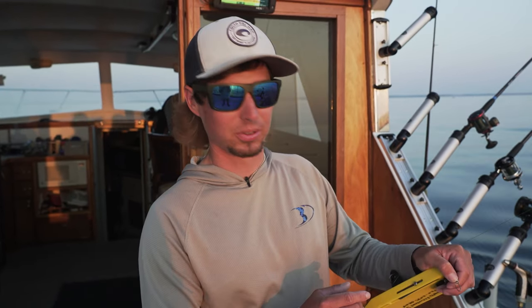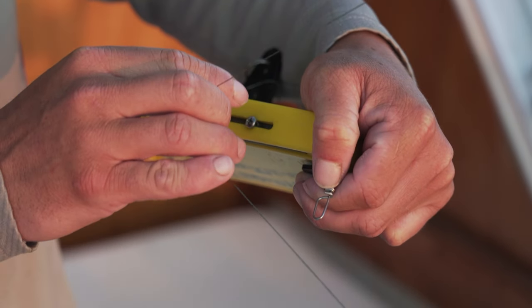Here's a little trick that I found out with braid when you're using snap swivels on planer boards. You see that little cross lock right there?